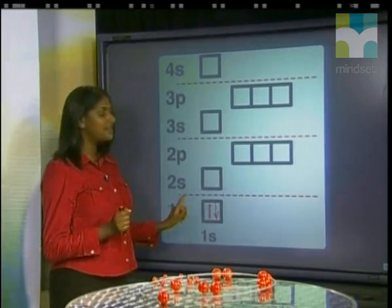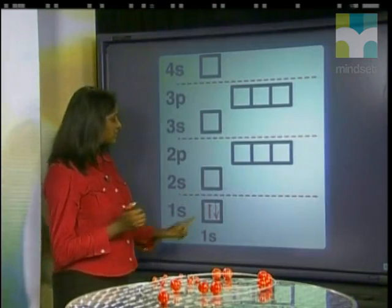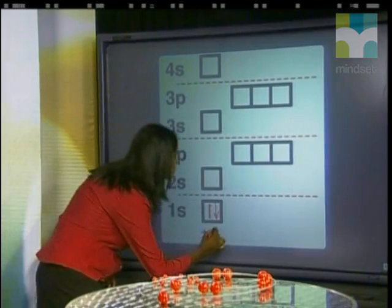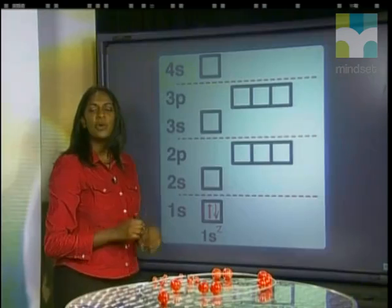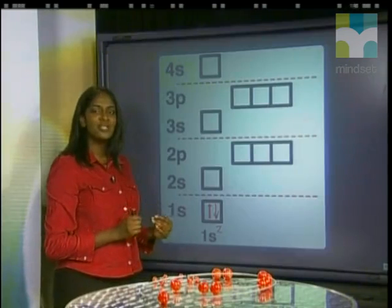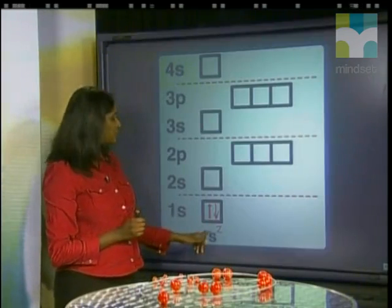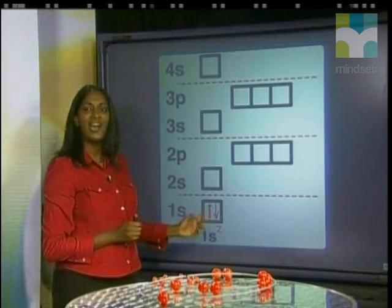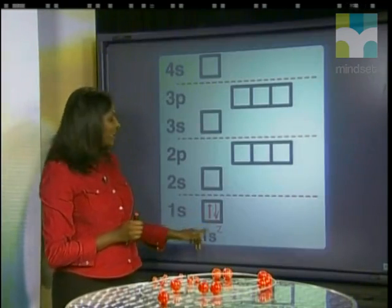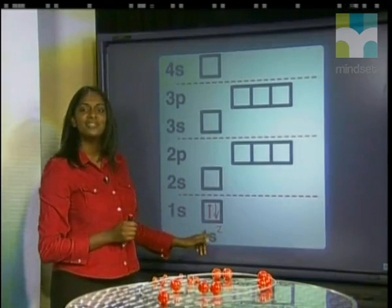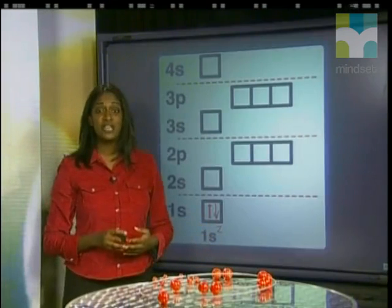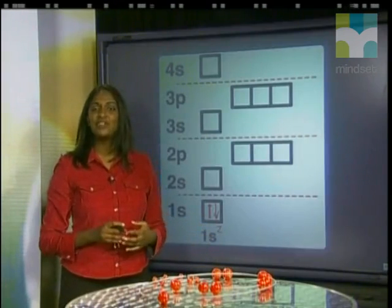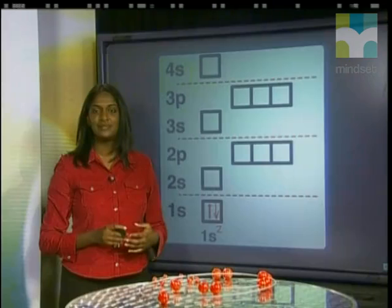Finally, the number of electrons, which is 2, is written as superscript: 1S². This shorthand notation is called the electron configuration.